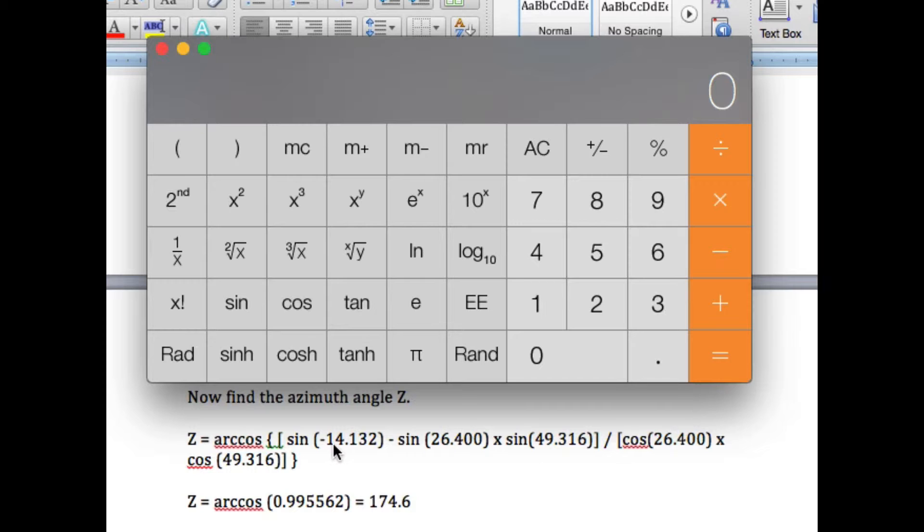So we're starting out, we got this, this must be the declination, so I got 14.132, and then I change the sign of that, and I take the sine, and I'm just going to add that right to the memory. Now I'll start with this one, 26.4, 26.4, and I take the sine of that, sine of that, and then times the sine, this must be HC, times 49.316, 49.316, and then I take the sine of that, and then equals, and now this I'm subtracting, so now I'm going to do memory minus.